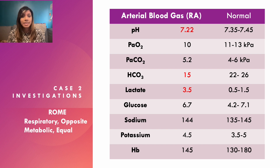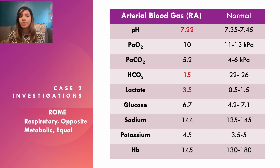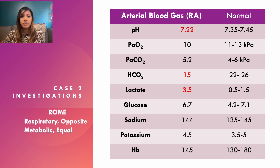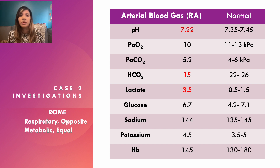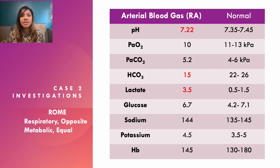We take an arterial blood gas. Using ROME: the pH is low — she's acidotic. The pCO2 is normal (not clearly opposite), so it's not primarily respiratory. The bicarbonate is low, moving equally with the pH — that's the metabolic equal. Her lactate is high because she's septic with a lot of anaerobic respiration producing lactic acid, and the bicarbonate is being used up buffering that lactic acid, which is why it's low.